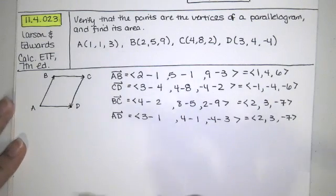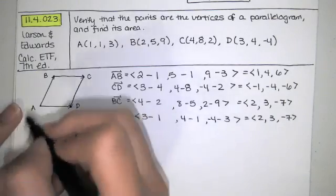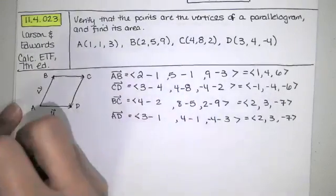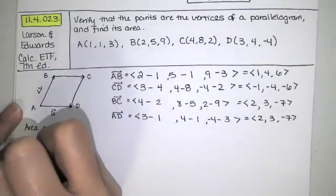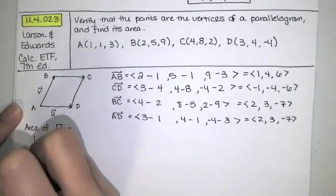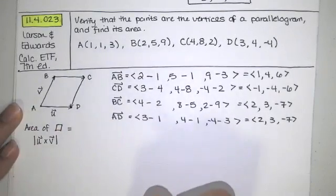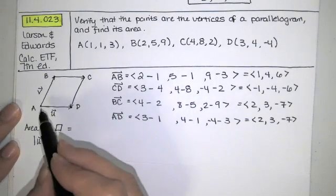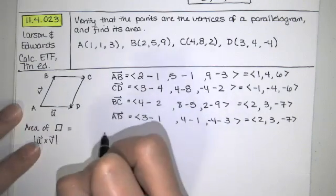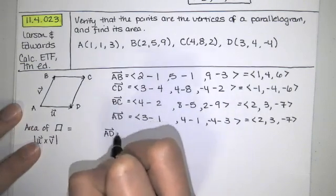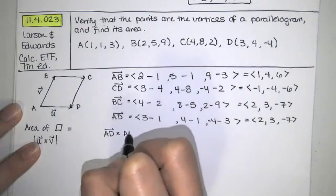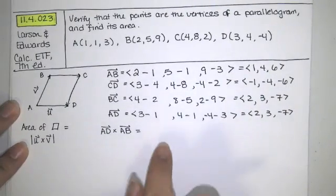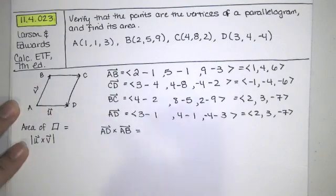Now we want to find the area of this parallelogram. The area of a parallelogram with U and V as sides, so let's say this is the vector U and this is the vector V, turns out to be equal to the magnitude of the cross product between U and V. So in our case, we need to find the cross product of the vector AD and the vector AB. And then once we find that cross product, we want to find its length. It turns out the length of that cross product vector is equal to the area of this parallelogram.